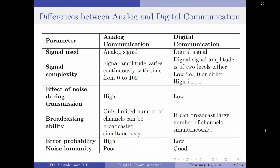These parameters are listed in the leftmost column. Let us start with the first parameter, which is the type of signal used. Quite obviously, analog communication uses analog signals whereas digital communication uses digital signals. Talking about the signals, let us now take the next parameter, which is signal complexity.